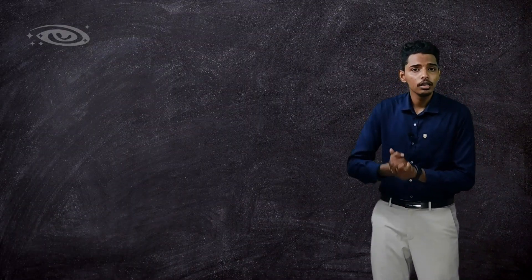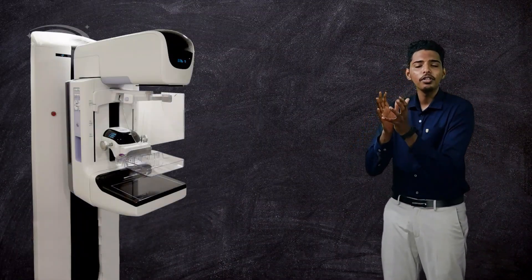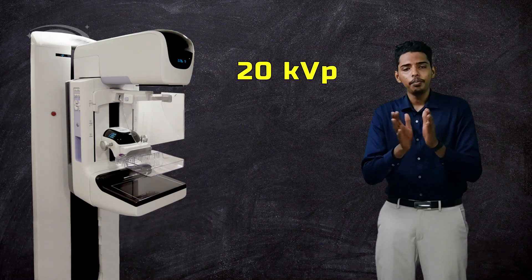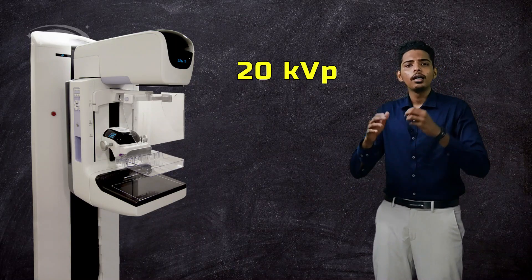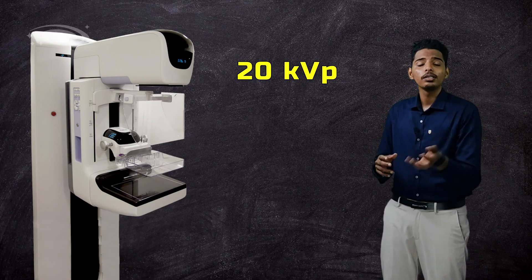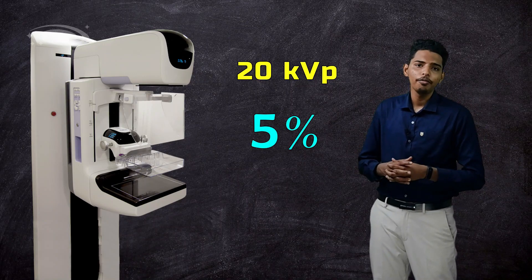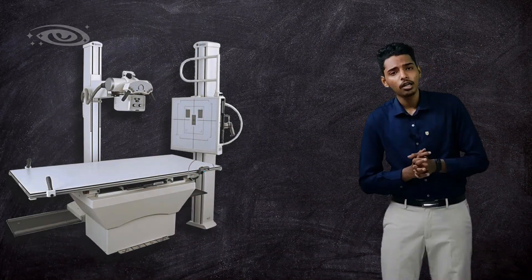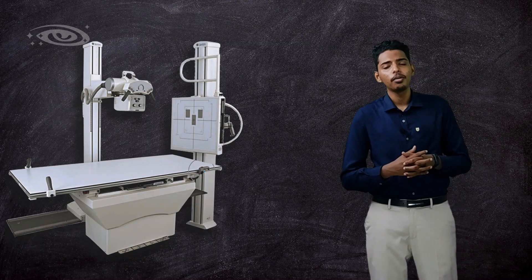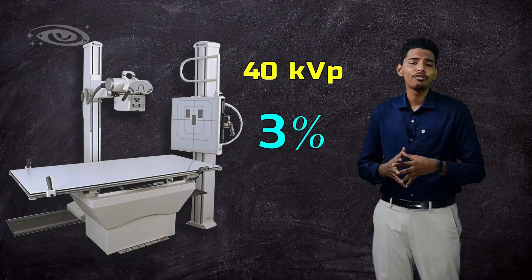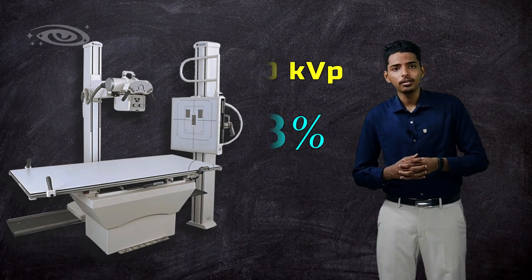In diagnostic radiology, mammography energy starts from 20 keVp, and at 20 keVp the coherent scattering may be around 5%. But in general radiography, the starting keVp is from 40 keVp, so we get around 3% coherent scattering.